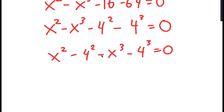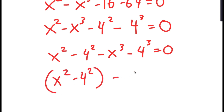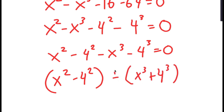There are two properties I'm going to use. I'm going to rewrite this as x squared minus 4 squared, grouped, minus x to the power of 3 plus 4 to the power of 3. We put this plus because this negative sign distributes.